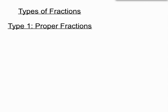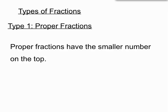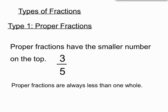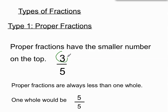There are two main types of fractions. We've got proper fractions, sometimes called common fractions. Proper fractions have the smaller number on top — they're the ones we're most likely to see, like 3 over 5. They're always less than one whole; one whole here would be 5 over 5, and we've only got 3 over 5.